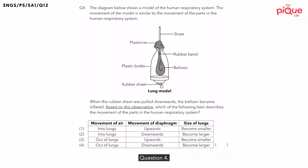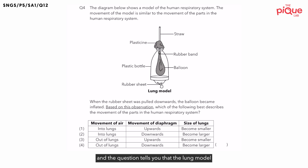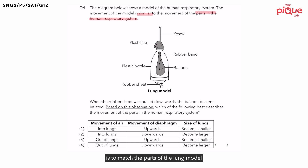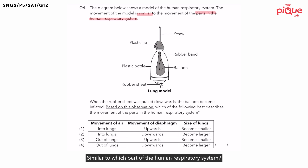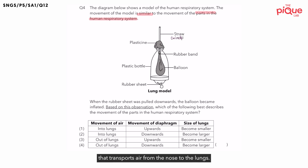Question 4. In this question, a lung model was drawn for you, and the question tells you that the lung model is similar to some parts of the human respiratory system. So what we need to do is match parts of the lung model to parts of the human respiratory system. Starting with the straw — its function is to transport air from the surrounding to the balloon, similar to the windpipe that transports air from the nose to the lungs.